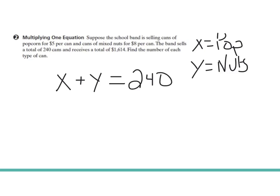We are collecting $5 for every can of popcorn and $8 for every can of mixed nuts, and we collected $1,614 for the total value. So here's a situation where we do not have opposite x's or opposite y's. But I can make this equation look different by multiplying everything by 5.